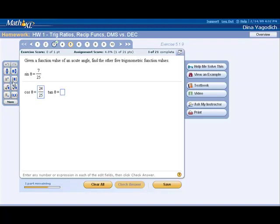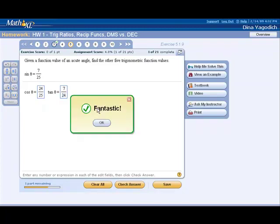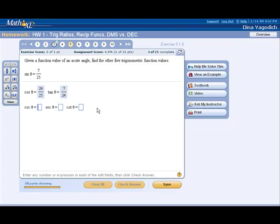And the tangent is equal to the opposite side, 7, over the adjacent side, 24. And the cosecant, secant, and cotangent are all done the same way.